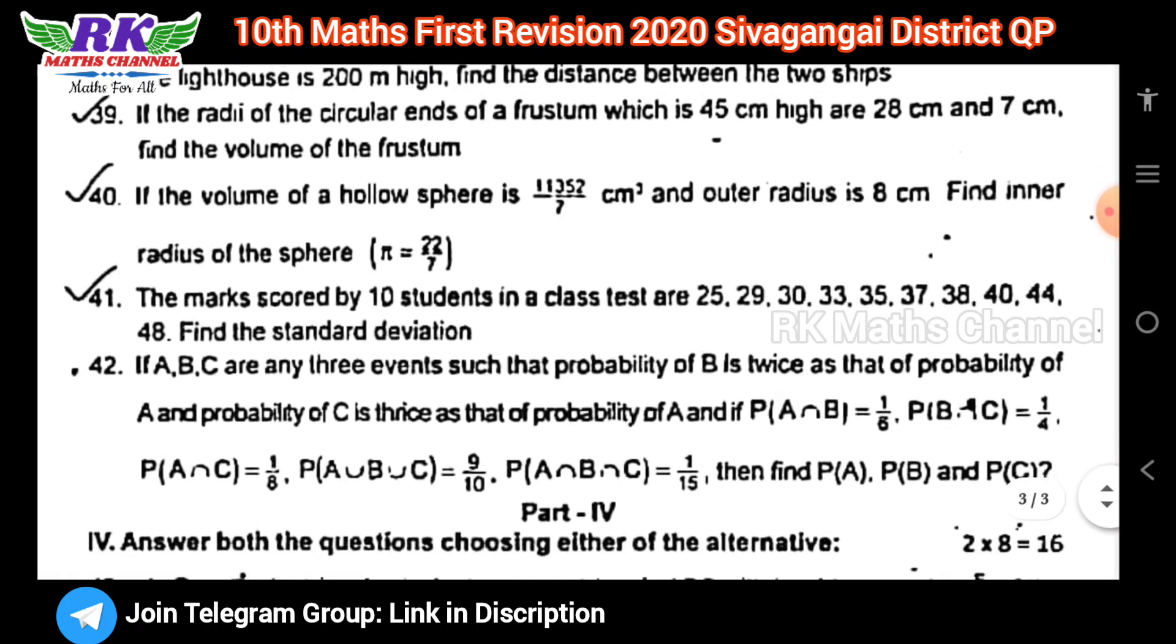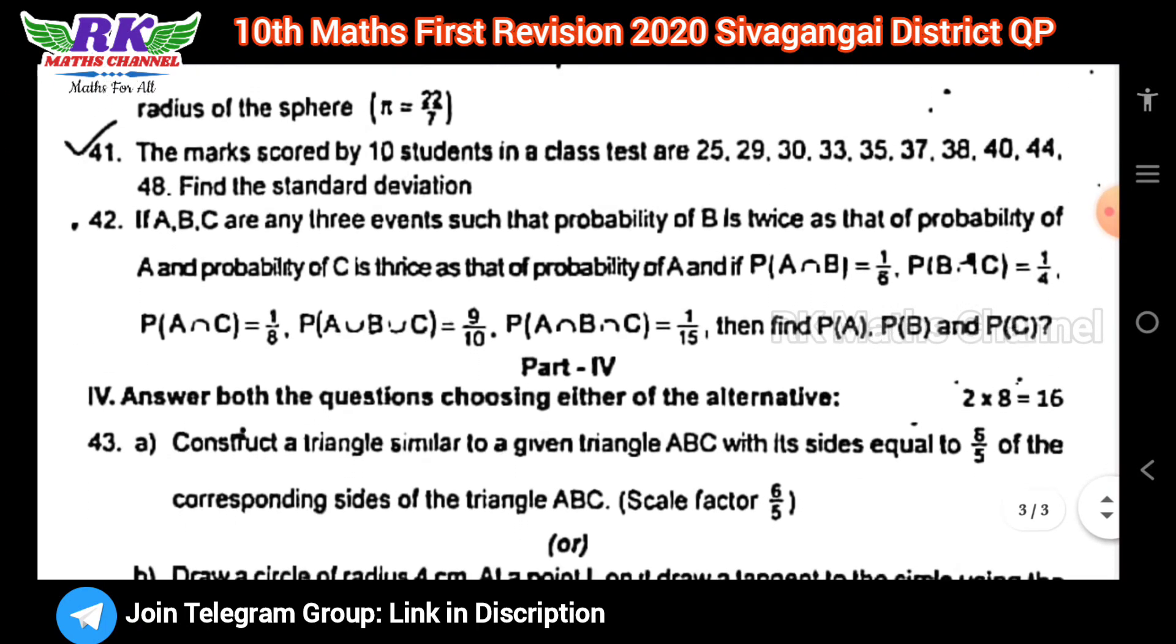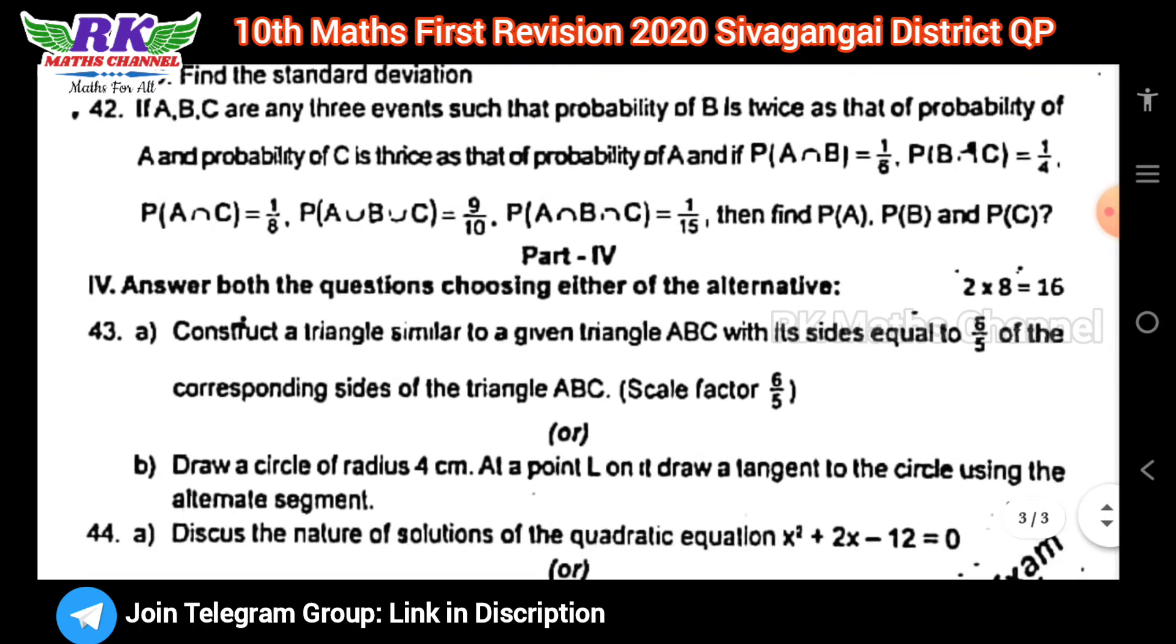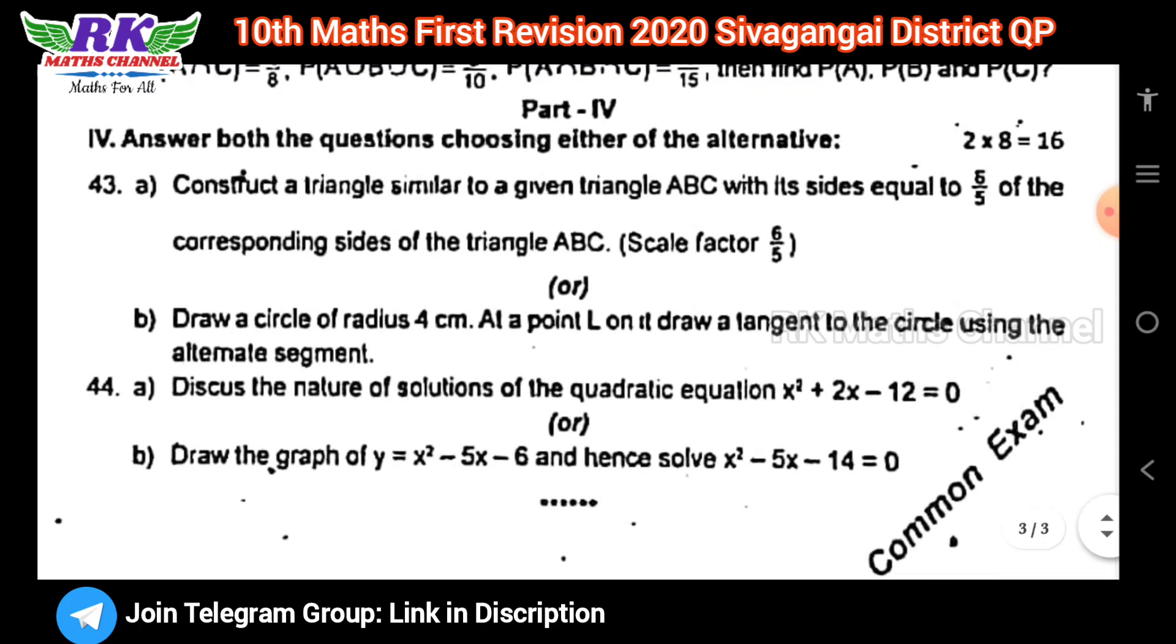Five marks questions - we have some important questions. There are 80 marks total. We have two important triangles with two examples. Question number 44 has probability graphs and quality graphs.